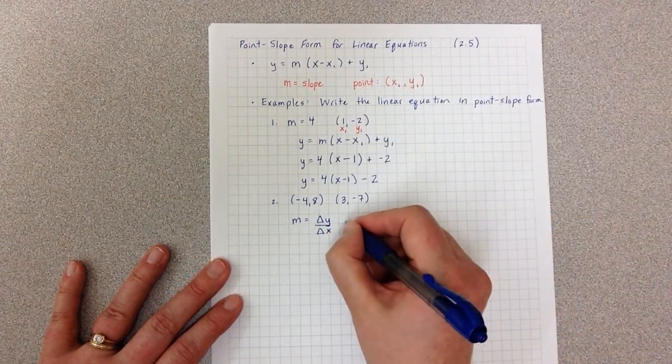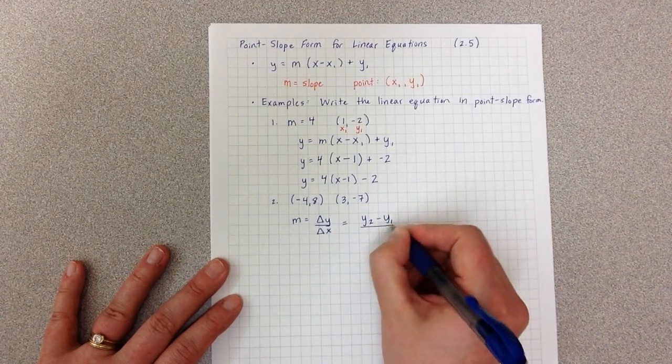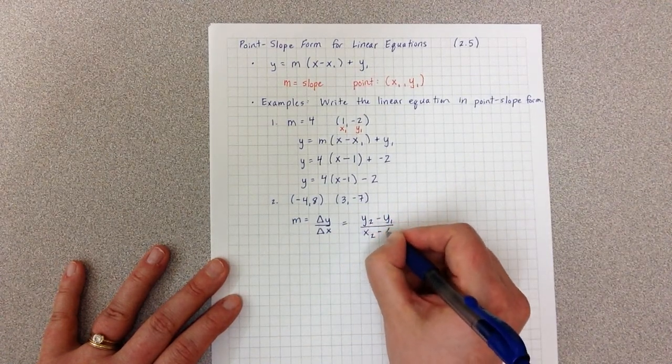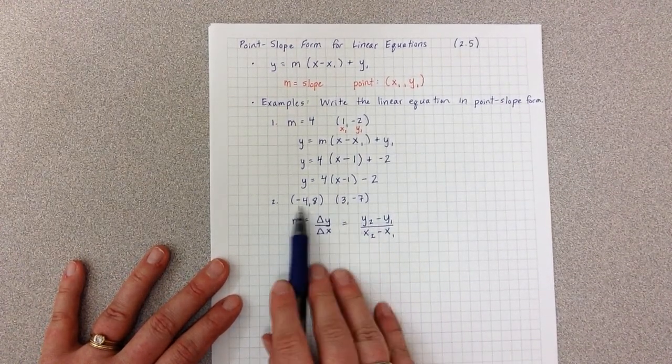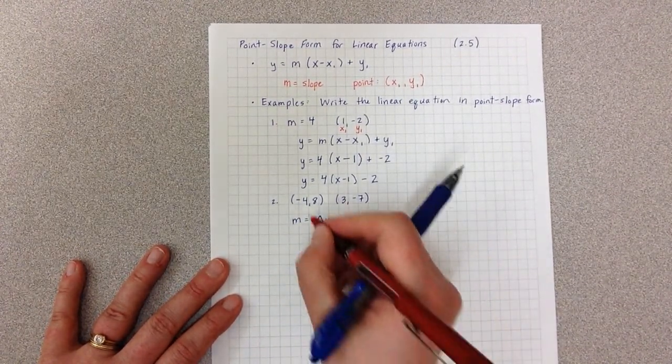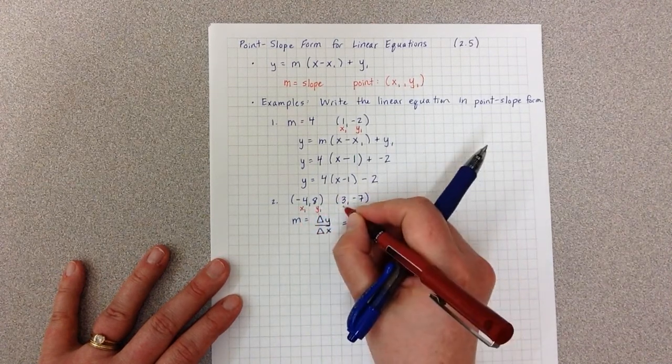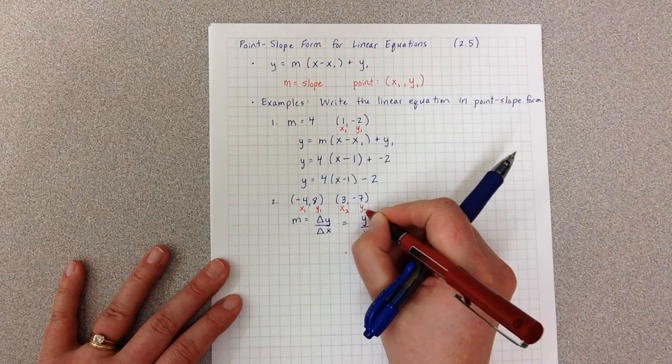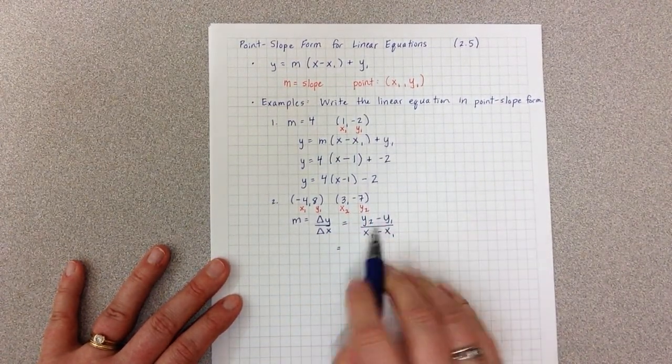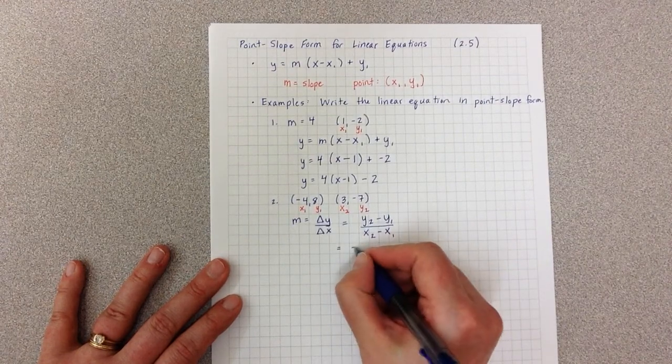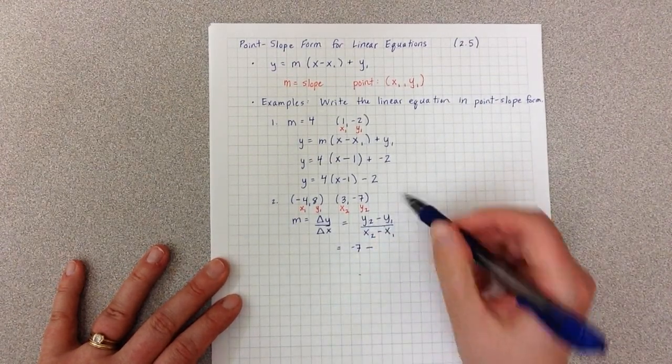which we often write as y2 minus y1 all over x2 minus x1. So now I'm going to plug in the various values here. Let's call this one our x1, y1, and this point our x2, y2. So now when I'm plugging those in,